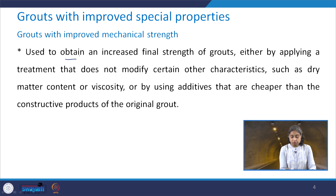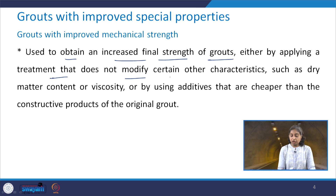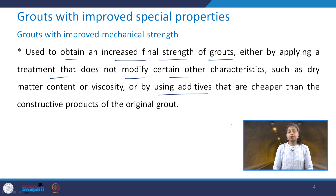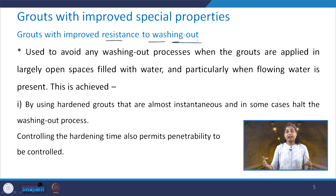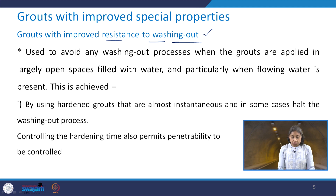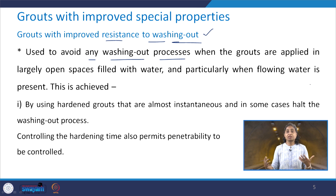Grouts with improved mechanical strength are used to obtain an increased final strength either by applying a treatment which does not modify certain other characteristics such as dry matter content or viscosity, or by using additives which are cheaper than the constructive products of the original grout. The next type is the grout with improved resistance to washing out. Wherever there is a large space with flowing water, we need a grout with improved resistance to washing out to avoid any washing-out processes when applied in largely open spaces filled with water.